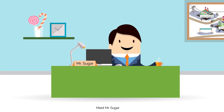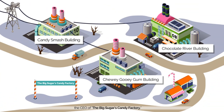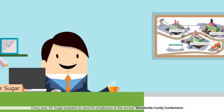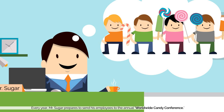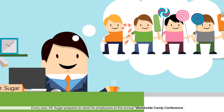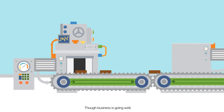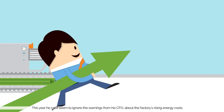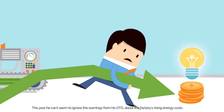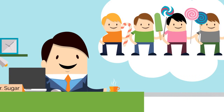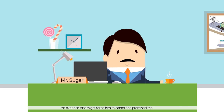Meet Mr. Sugar, the CEO of Big Sugar's Candy Factory. Every year, Mr. Sugar prepares to send his employees to the annual Worldwide Candy Conference. Though business is going well, this year he can't seem to ignore the warnings from his CFO about the factory's rising energy costs, an expense that might force him to cancel the promised trip.